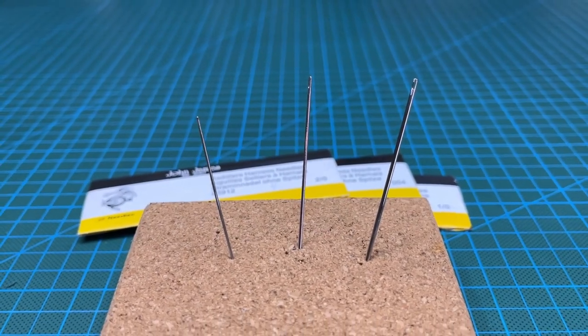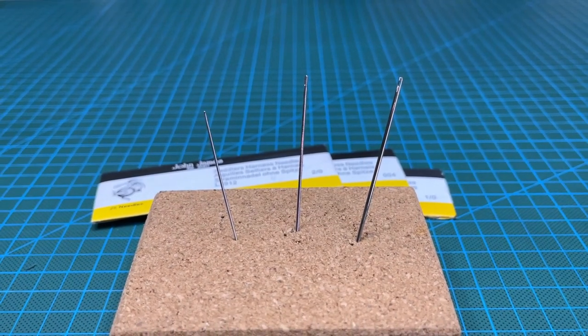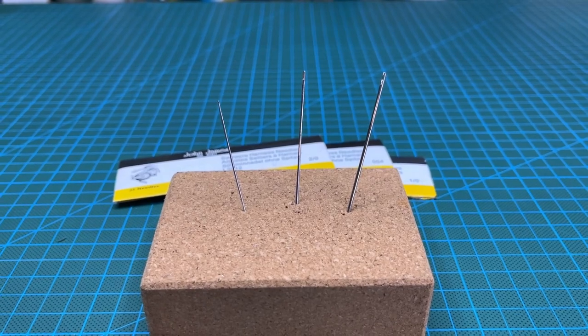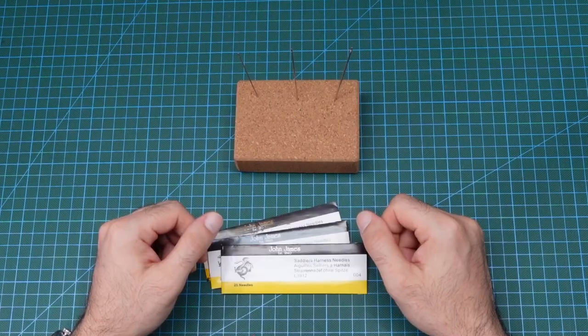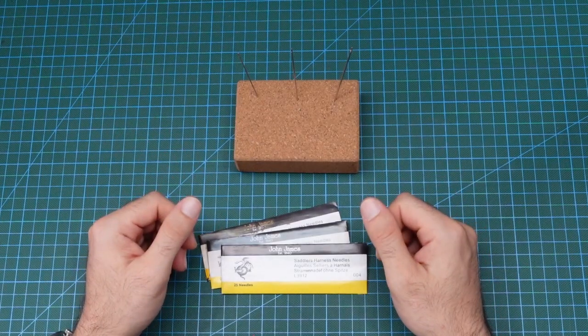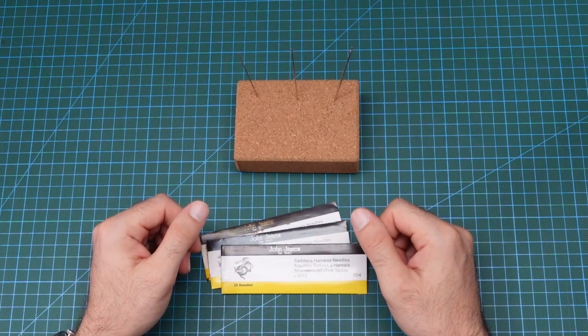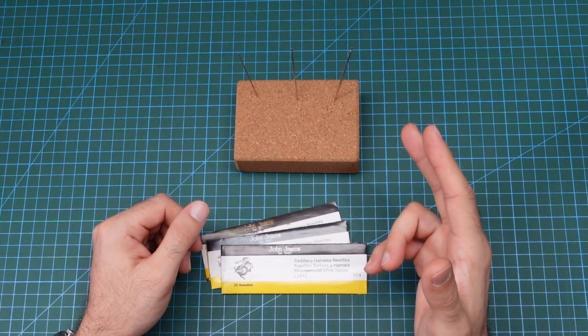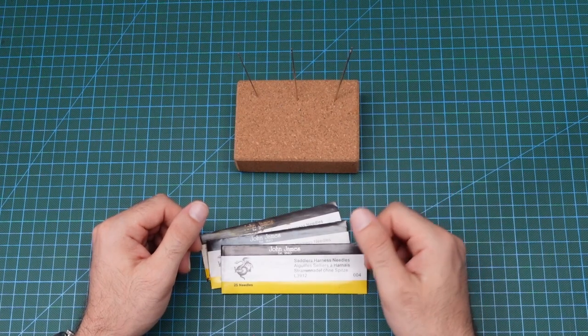The smallest needle here is the John James 004 which is 0.8 mm thick. If you need a smaller harness needle than that for when you are using very fine threads, you will need to go to a different brand such as Systems S plus U where they have a harness needle which is only 0.7 mm thick.